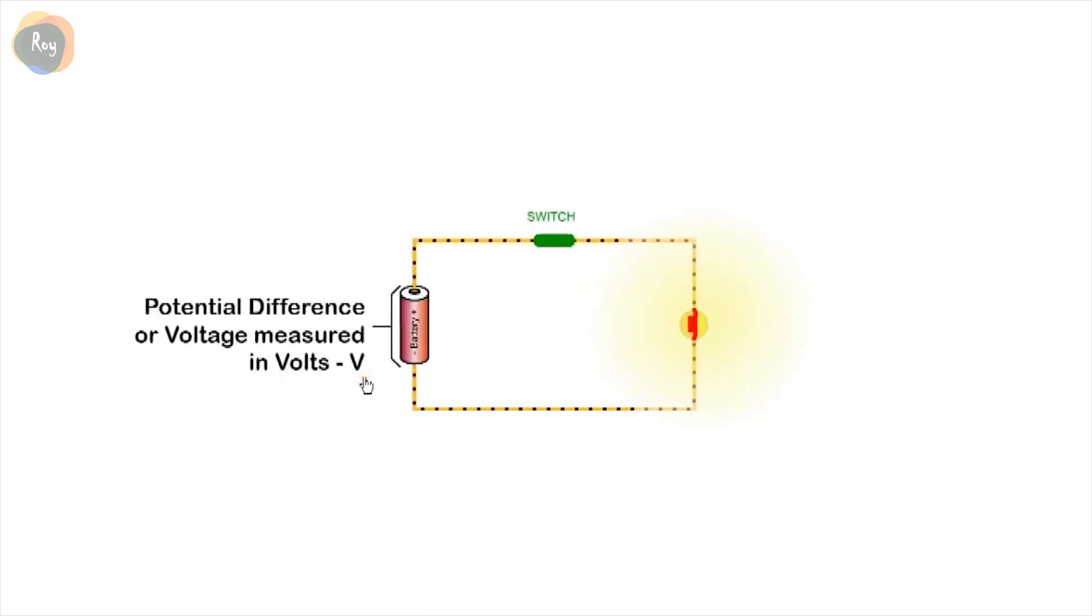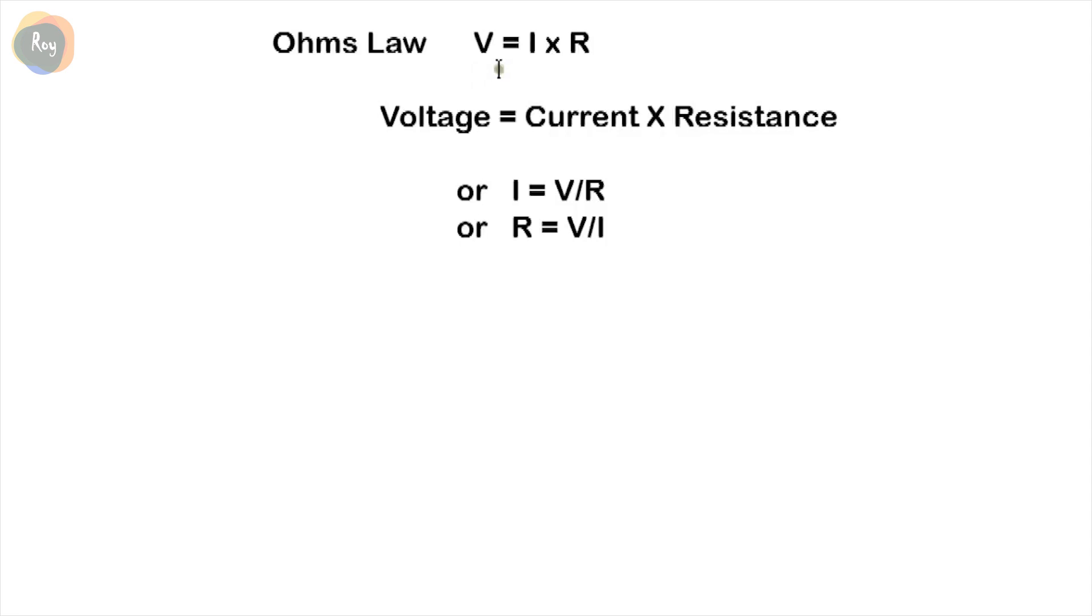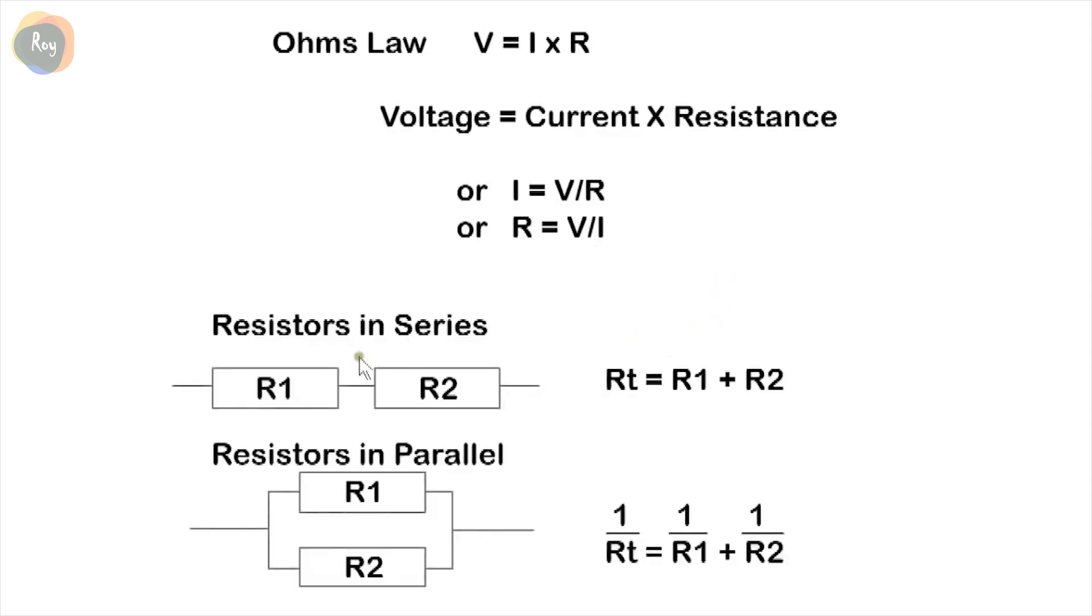The potential difference or voltage is measured in volts and has the symbol V. Current is measured in amps and has the symbol I. Resistance is measured in ohms and has the ohm symbol. Electric calculations are based on Ohm's law, which states that voltage equals current multiplied by resistance, or I equals V over R, or R equals V over I. When resistors are connected in series, we add the values to get total resistance.